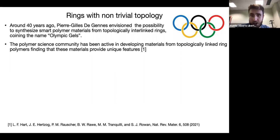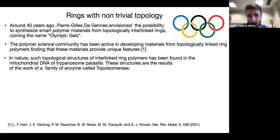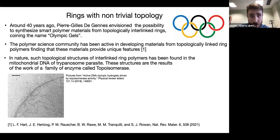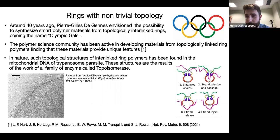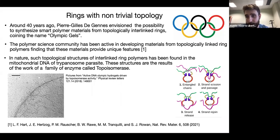Such structures exist in nature and can be found in the mitochondrial DNA of trypanosoma parasite. This structure is called the kinetoplast DNA, and is made up by thousands of mini-circular DNAs maintained through the action of a family of enzymes called topoisomerases. This enzyme cuts a DNA strand, makes another strand pass through, and then reseals the cut strand. In this way, it can catenate DNAs, and if strands belong to the same DNA, it can also form knots.